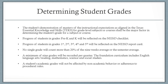Progress of students in Pre-K and Kindergarten will be reflected on the NEISD checklist. Progress of students in grades 1st, 2nd, 3rd, 4th, and 5th will be reflected on the NEISD report card. No single grade will count more than 20% of the 9-weeks average or the semester average. A minimum of 9 grades will be recorded per quarter.